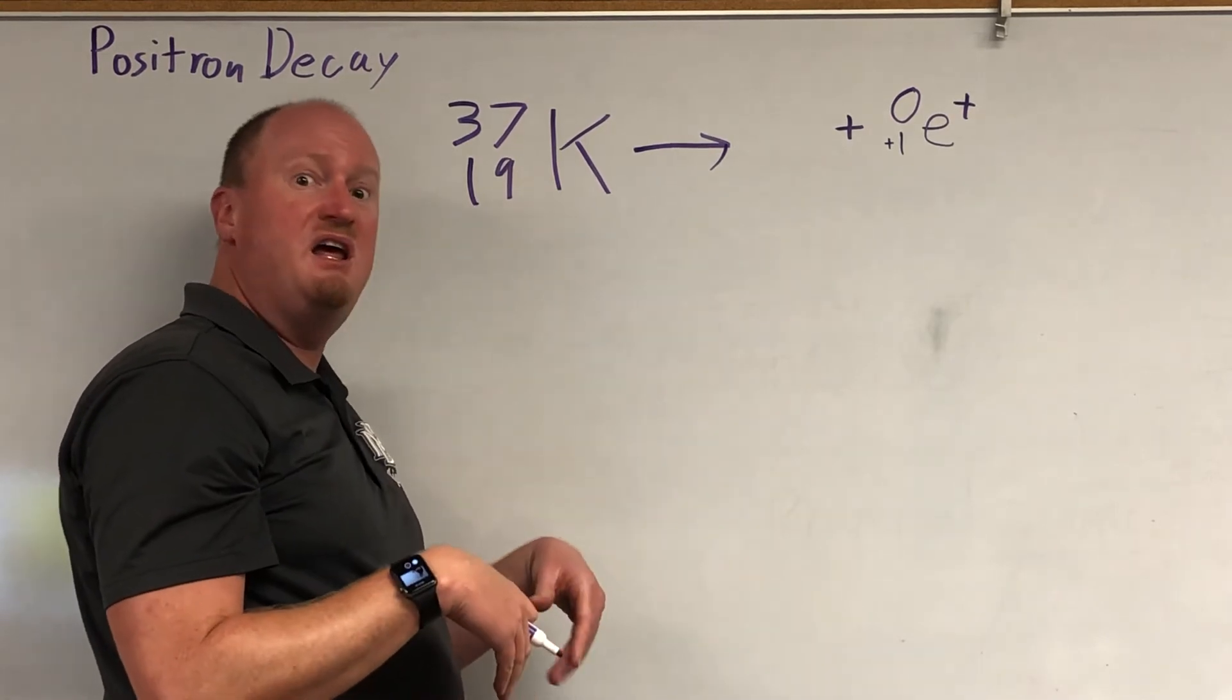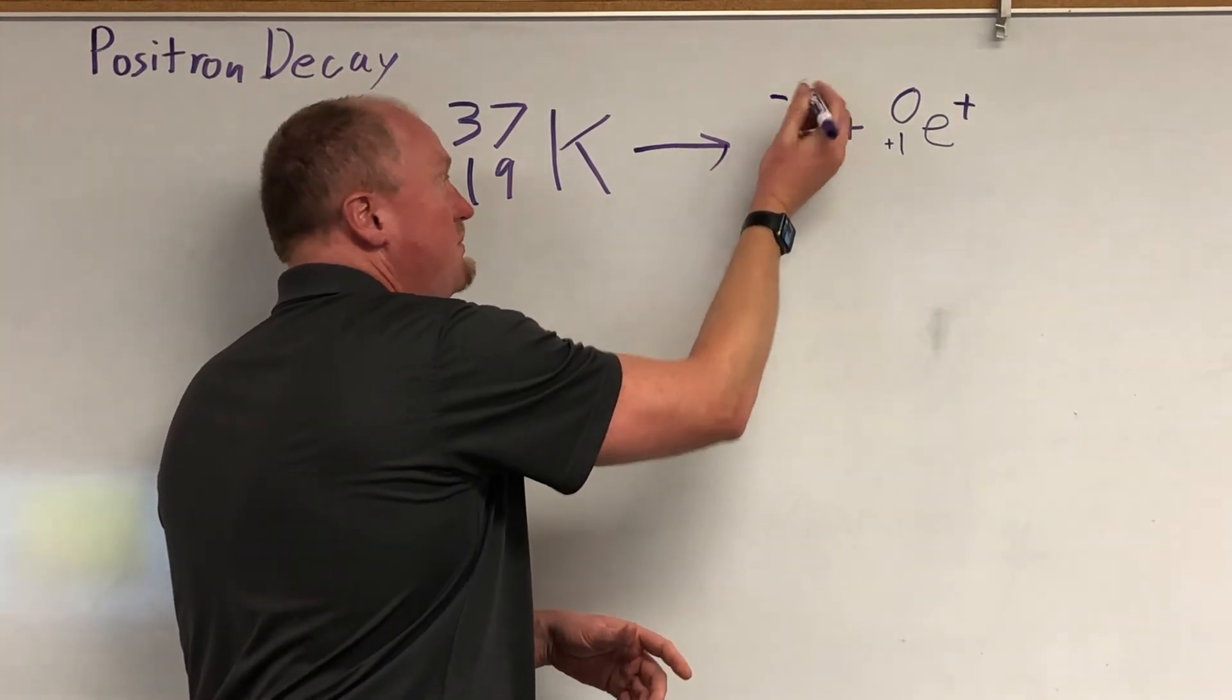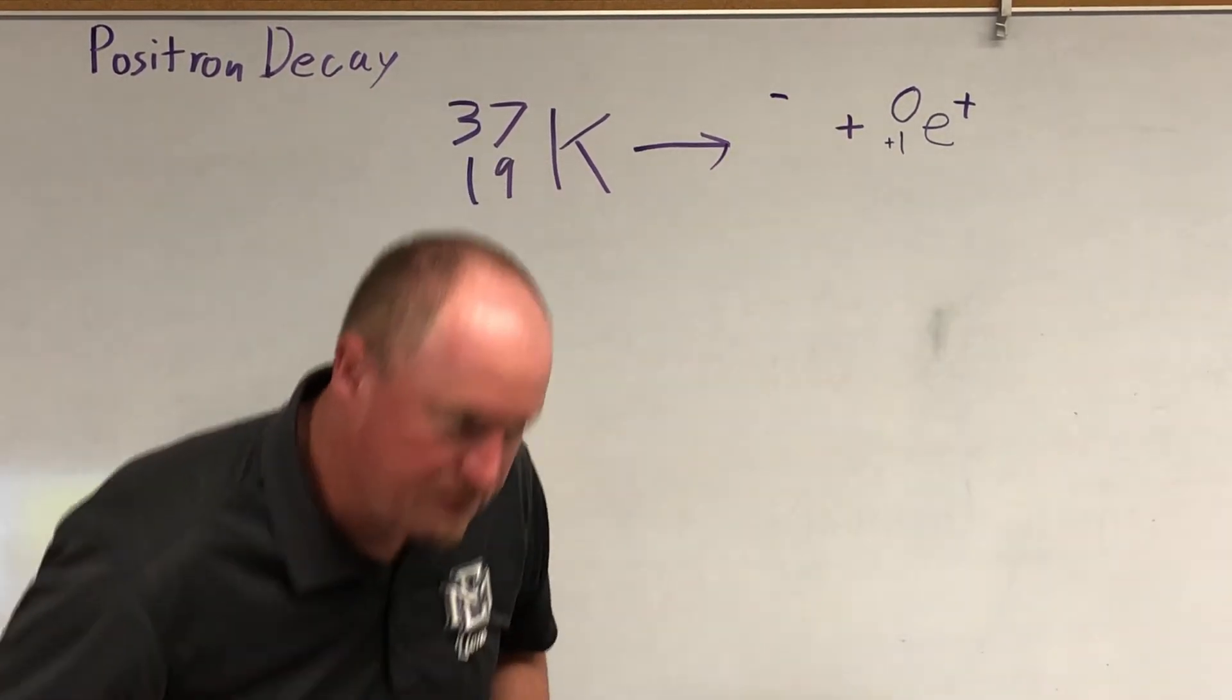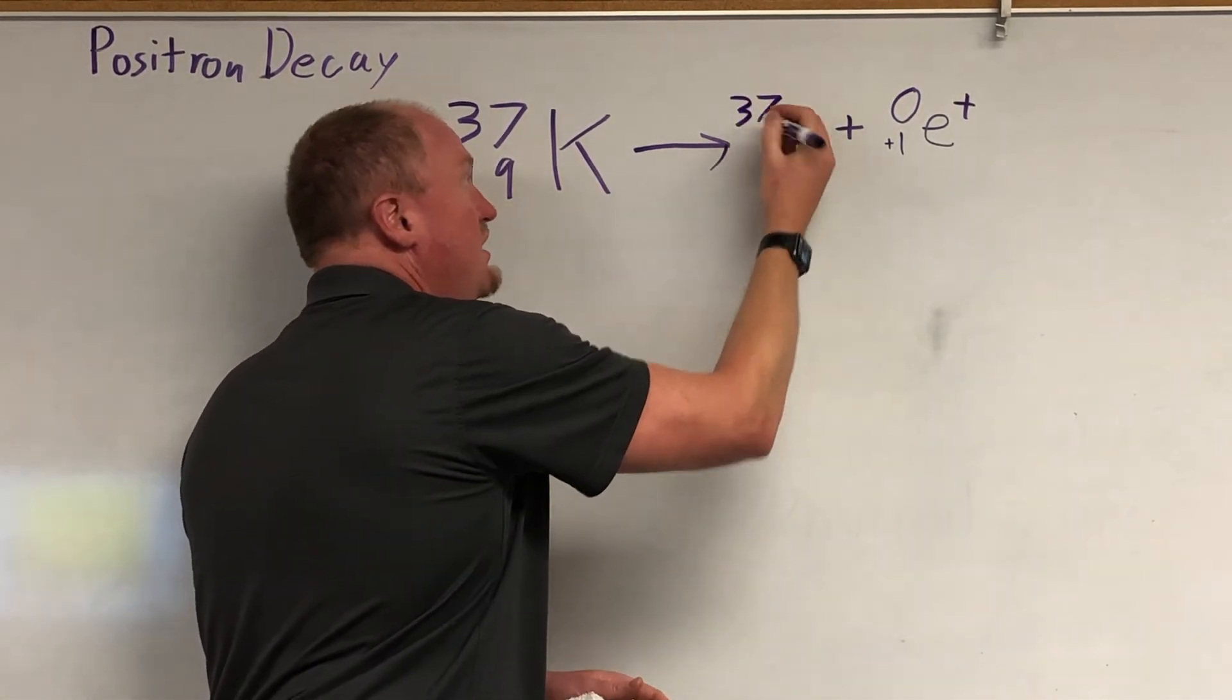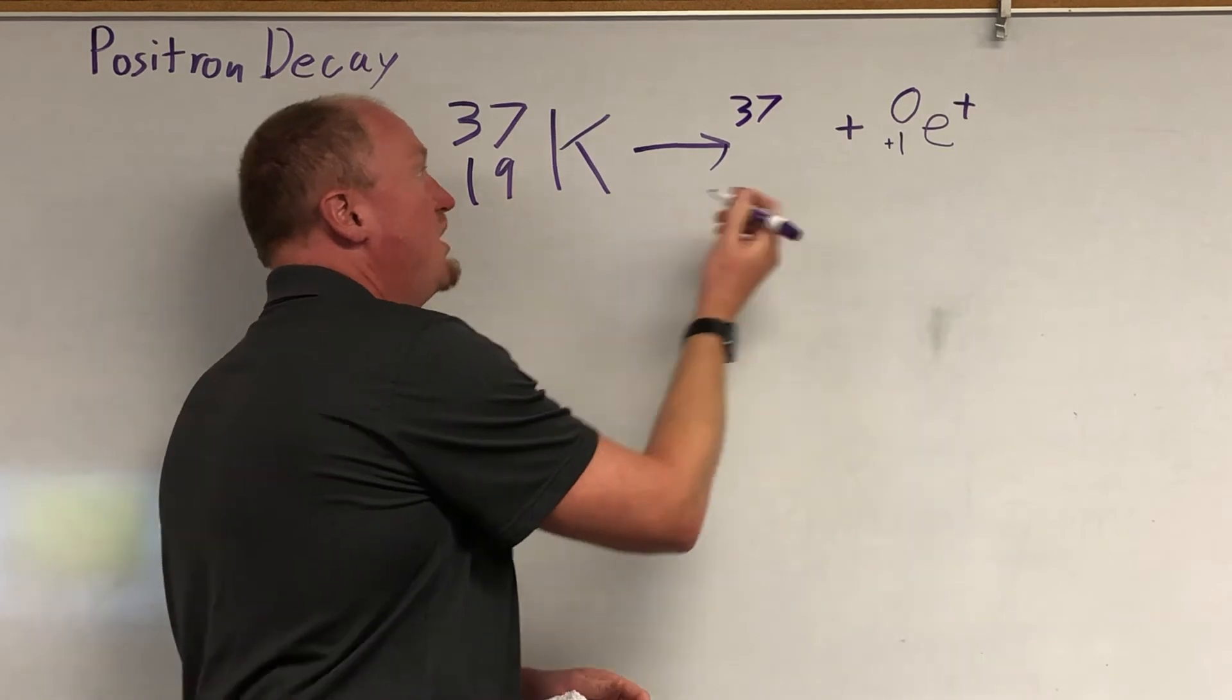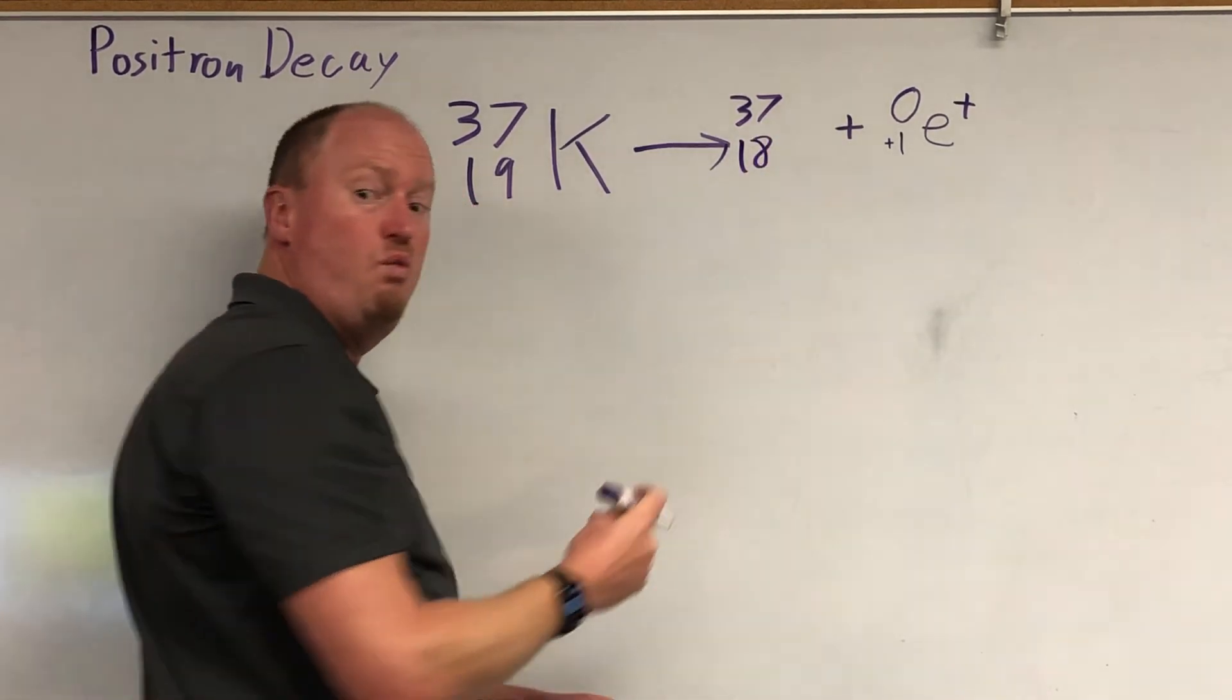A proton is becoming a neutron. So the mass doesn't change because the total number of nucleotides, or not nucleotides, but nucleons stays the same. So the mass stays the same. One of the protons has become a neutron, which makes the atomic number one less.